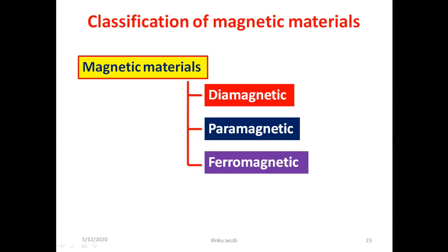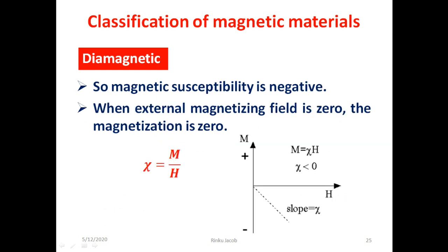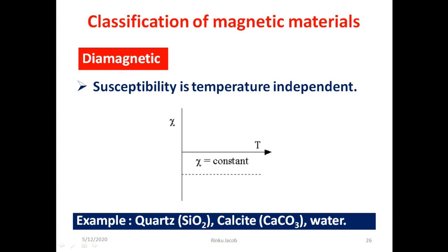Now we discuss the classification of magnetic materials: diamagnetic, paramagnetic, and ferromagnetic. Diamagnetism is a fundamental property of all matter, although it is very weak. Diamagnetic substances are composed of atoms which have no magnetic moments — all orbitals are filled with no unpaired electrons. When exposed to a field, a negative magnetization is produced, so magnetic susceptibility is negative. When external magnetization field is zero, magnetization is zero. For a diamagnetic material, the magnetic susceptibility is temperature independent. Examples for diamagnetic materials are quartz, calcite, water, etc.